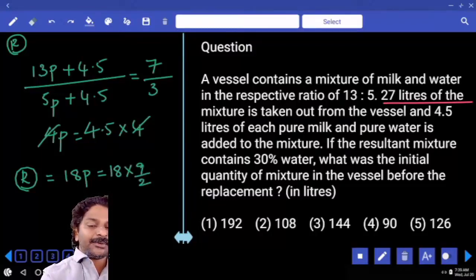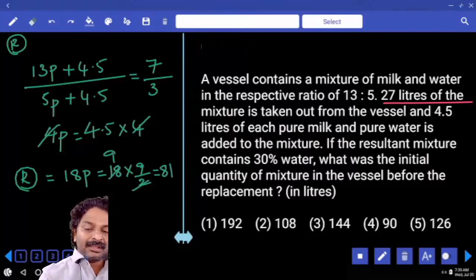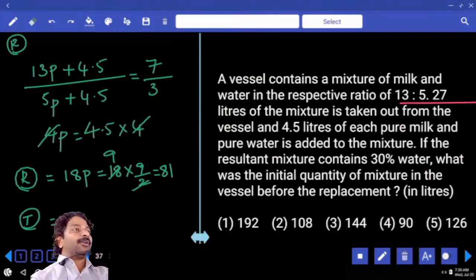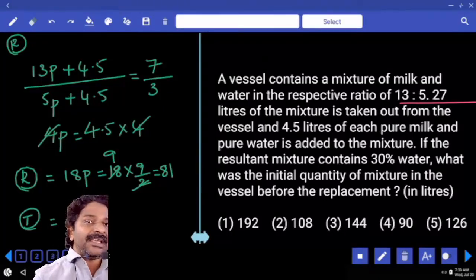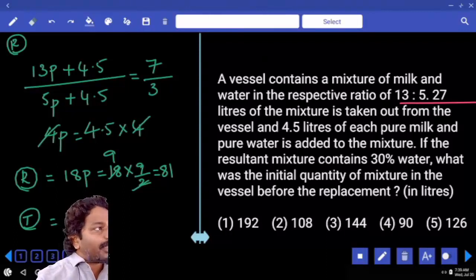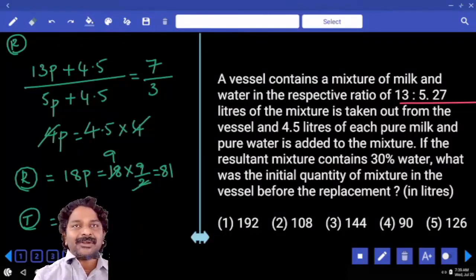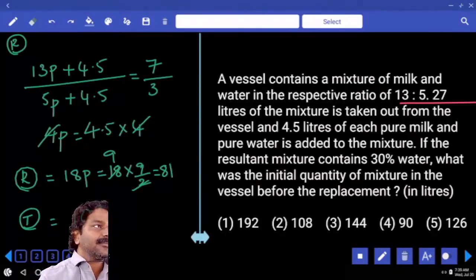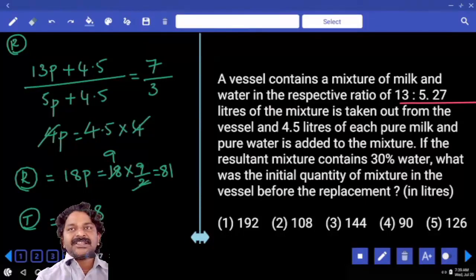Then you said remaining quantity was 18 parts only. 18 parts in the sense 18 into 4.5. Can we write it as 9 by 2, 9 times which is 81. Now we need total quantity. Remaining quantity was the quantity left over after taking out 27 liters. Now if you add 27 to the remaining you will get total. Add 27 to this number: 108. And that is what we have. We simply verified only 27 multiple, that is it.